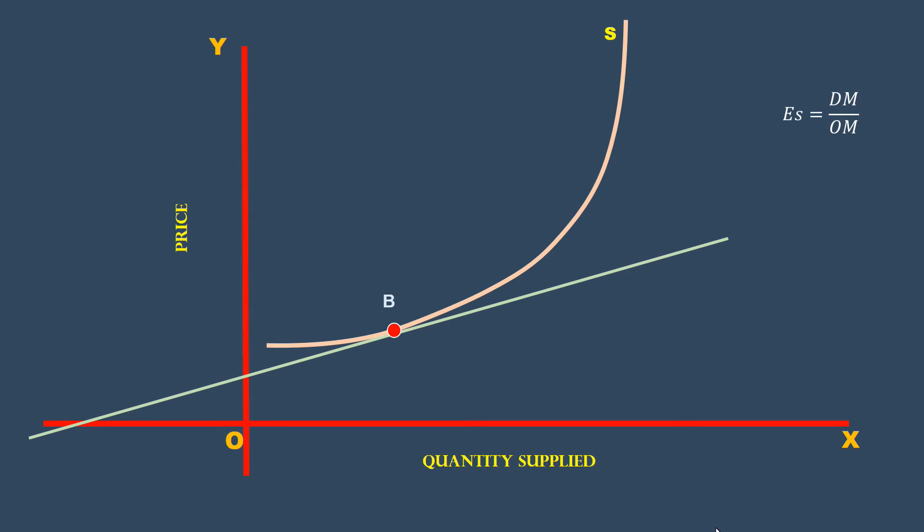Elasticity of supply at point B is greater than 1 because the tangent passes through the y-axis. Again, look, Dm is greater than Om. At point B, supply is relatively elastic.